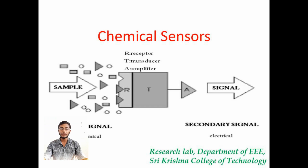The primary signals may be electrochemical, optical, mass, or thermal. The secondary signal may be electrical.